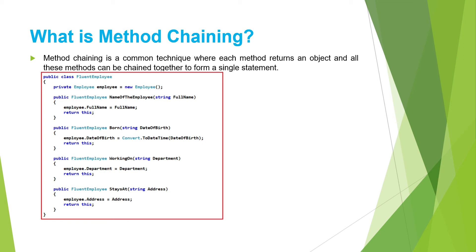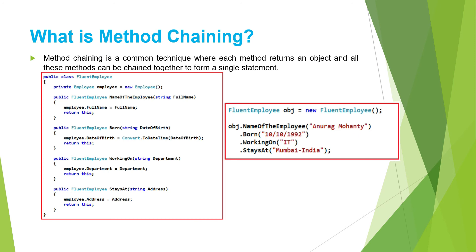With the above FluentEmployee class, the client code should look as follows. We create an instance of the FluentEmployee class and then call its methods one after another using the dot operator. Each method sets the property values of the Employee object internally — the NameOfEmployee method sets the FullName property, the Born method sets the DateOfBirth property, the WorkingOn method sets the Department property, and the StayAt method sets the Address property.